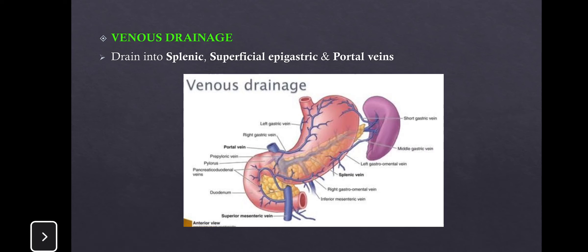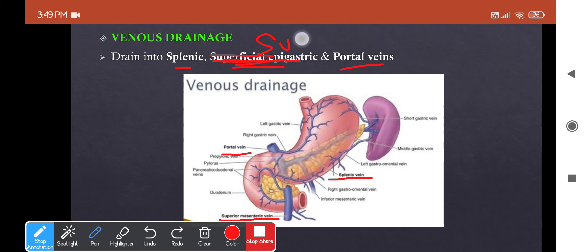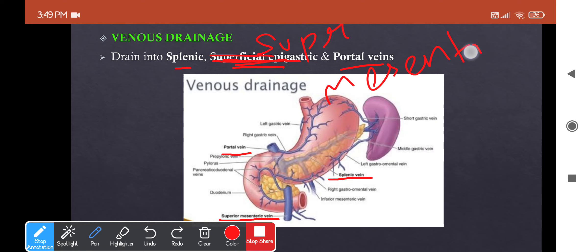The veins draining the duodenum end up in three major veins: the splenic vein, the superior mesenteric vein, and the portal vein.